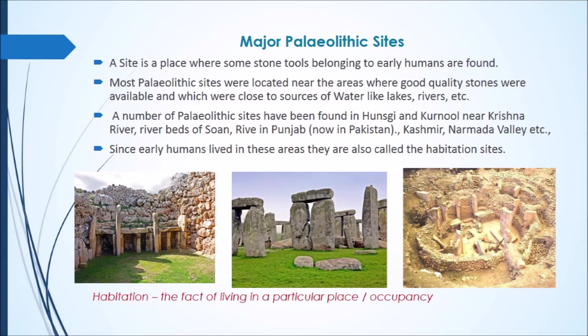Now we will study about the major Paleolithic sites. We already know that early humans settled in places where there were good sources of water like rivers and lakes. A site is a place where some stone tools belonging to early humans are found. Most Paleolithic sites are located near areas where good quality stones are available and which were close to sources of water.